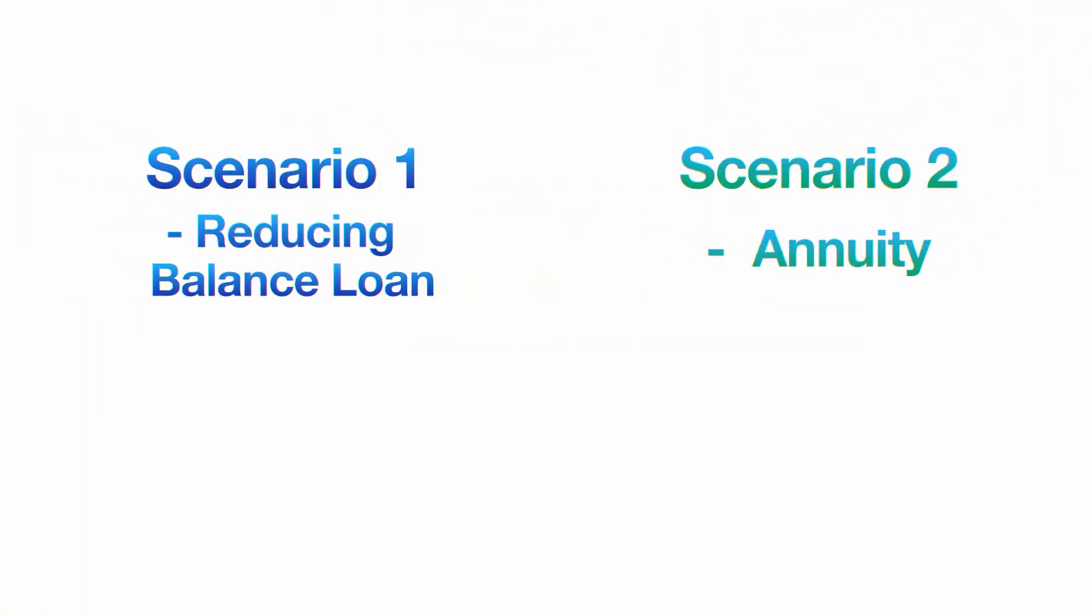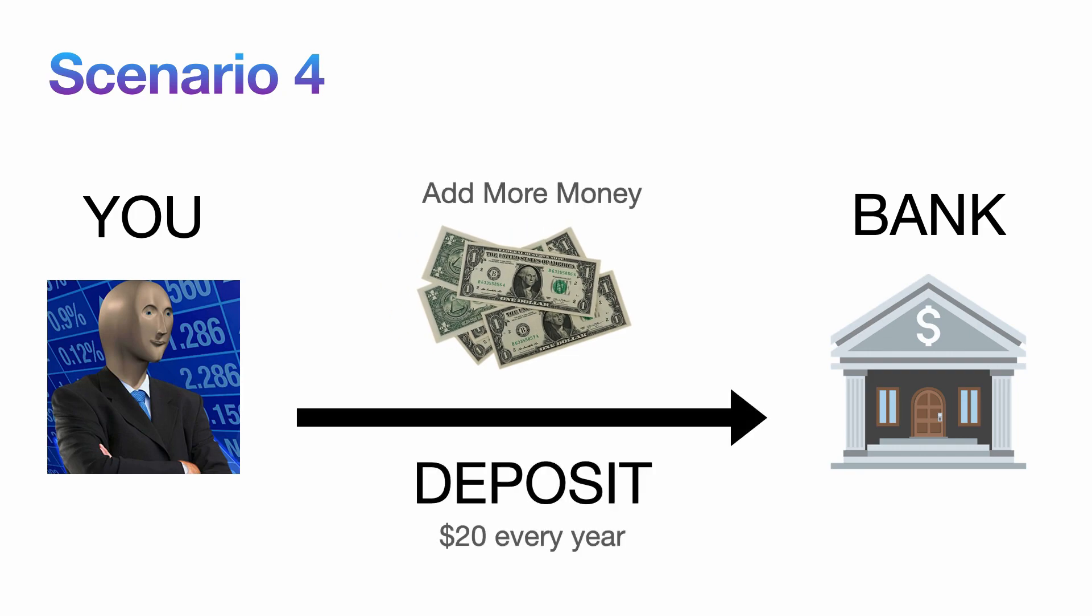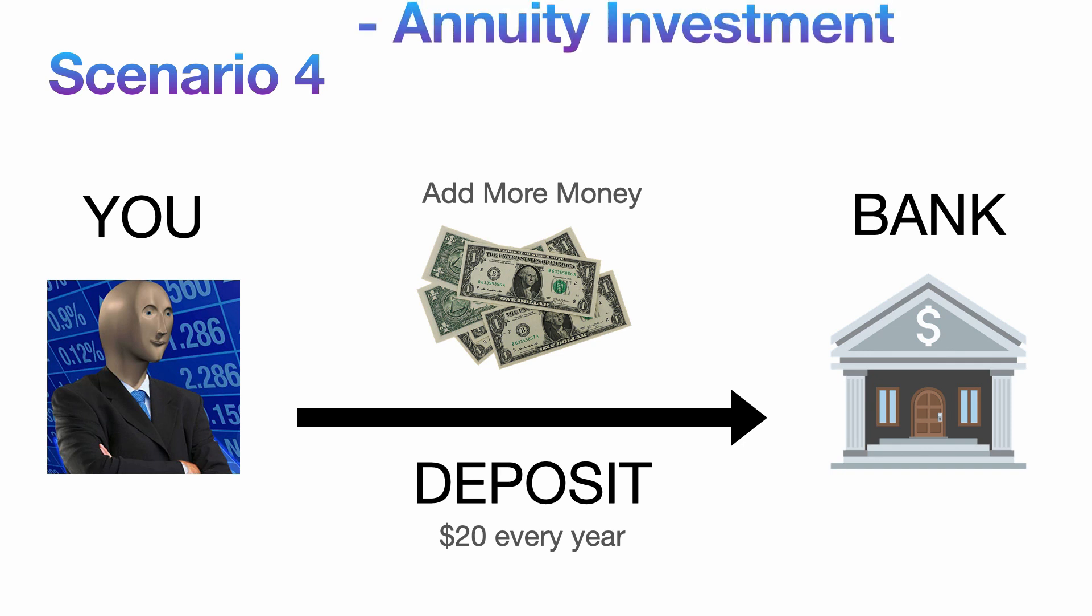Okay, we've finally come to Scenario 4 now. So again, you invest $100, the bank pays you 10% compound interest, but this time, instead of taking money, you're going to add $20. That's right, you're just going to keep giving the poor bank more money. This is called an annuity investment.